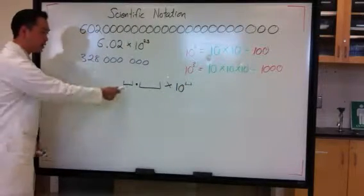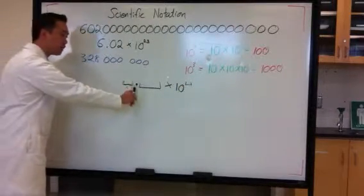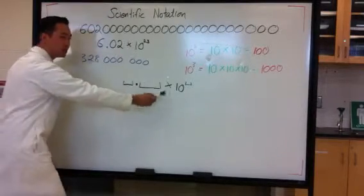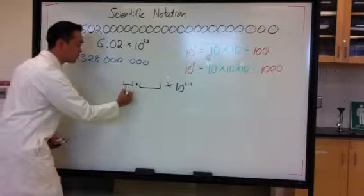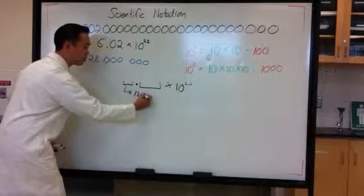Alright, so one more time. A single digit, followed by a decimal, and the remainder of the digits times 10 to the power of an exponent. Now, the key here is that the first digit must be a non-zero number.